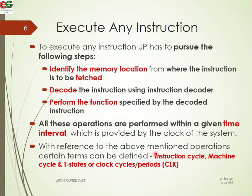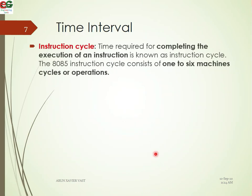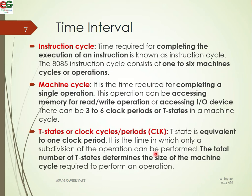With reference to the above-mentioned operations, certain terms can be defined. These terms are important: the Instruction Cycle, Machine Cycle, and T-State. The time required for completing the execution of an instruction is known as the Instruction Cycle. The instruction cycle consists of one to six machine cycles. All these operations are performed within a given time interval provided by the clock system.